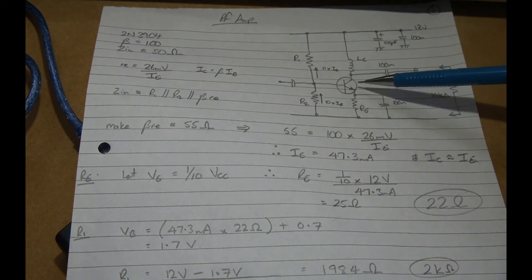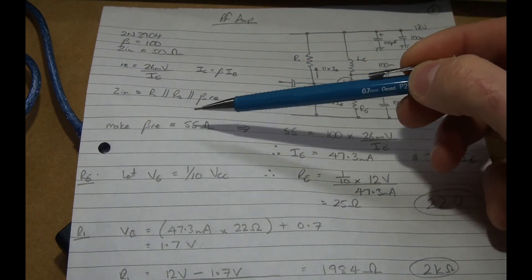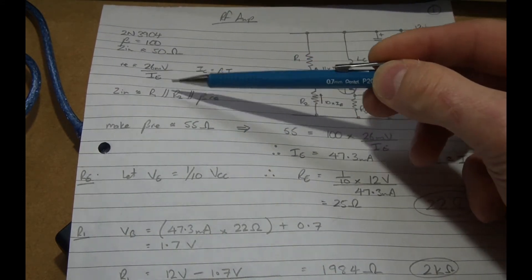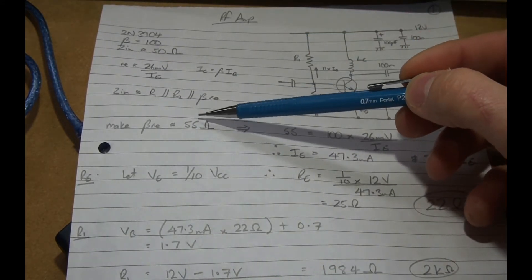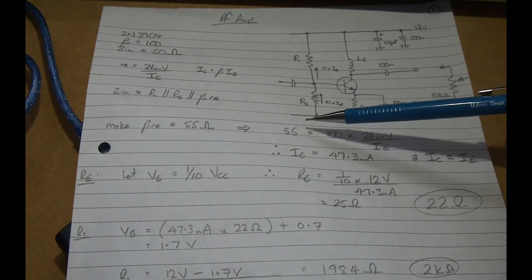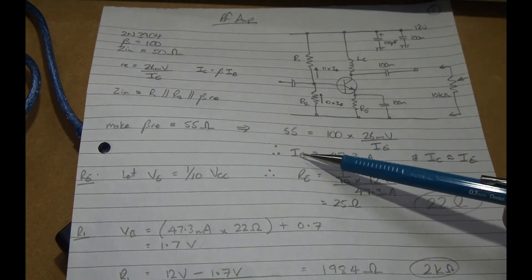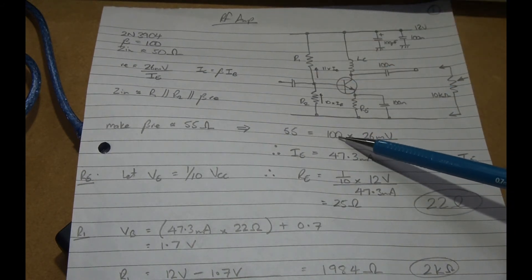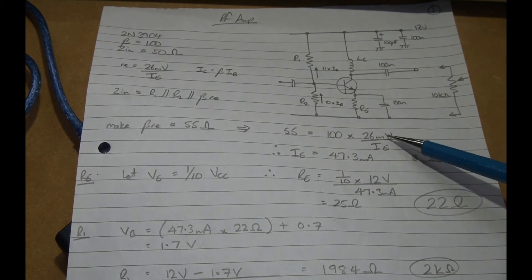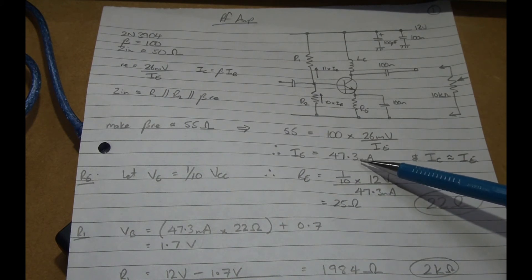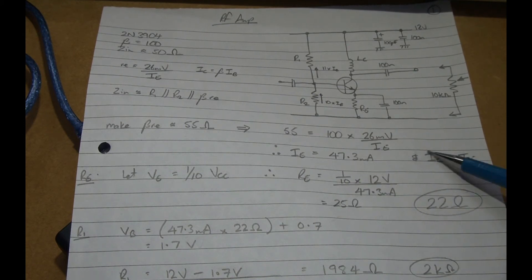Right, so from here I make the assumption or I just set little beta Re to be around 55 ohms, so once it's in parallel with these two it's roughly 50 odd ohms. If we now reverse engineer it to try and make IE the subject, we can substitute in 100 for the beta. Assuming little Re is 26 millivolts divided by IE will come out with an emitter current of around 47 milliamps. And we'll also assume from a rule of thumb that IC is approximately equal to IE.